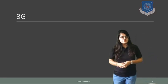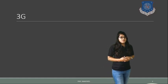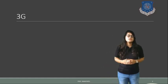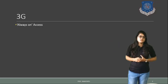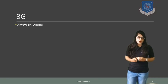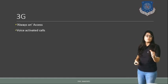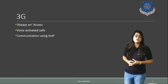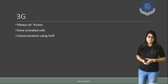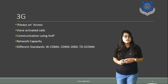Now in this session, let's start with the Third Generation wireless communication. Here we can develop the Enhanced Data Rate for this third generation — we can say it is the modified version of EDGE. The features that third generation provides compared to second generation include: always-on type of access, voice-activated call, and VoIP — Voice over Internet Protocol — is possible with the enhanced network capability and the different standards supported by third generation.